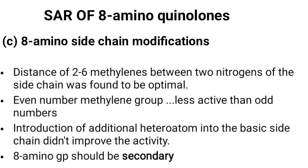For the 8-amino side chain modifications: the side chain has two nitrogens, and between them there should be two to six methylene units, which is optimal for activity. An even number of methylenes is less active than an odd number. Introducing an additional heteroatom into the basic side chain does not improve activity. The amino group in the side chain should be secondary in nature. That concludes the SAR of quinolones.